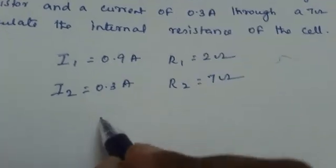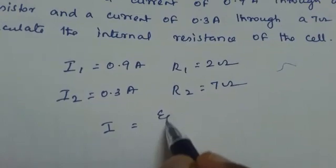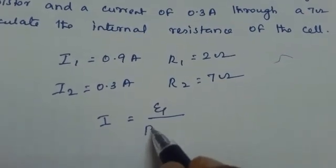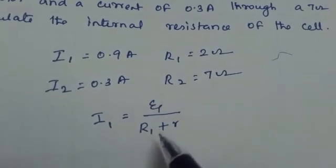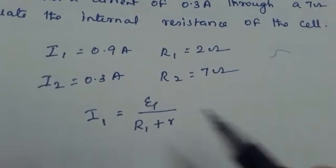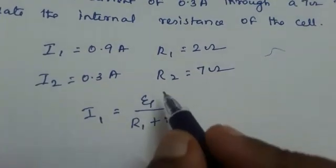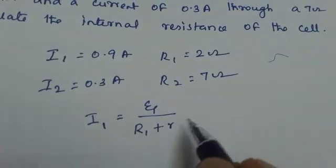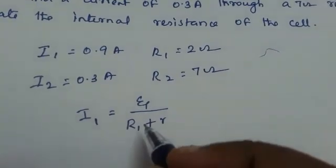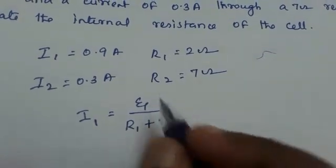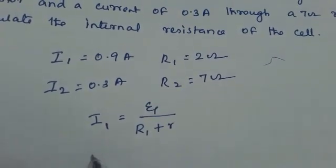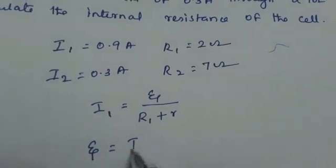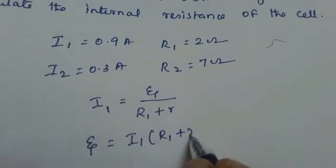I am going to use the formula current is equal to EMF by resistance. Resistance is the total resistance, that is the internal resistance as well as the resistance in that circuit. So I1 is equal to total EMF by total resistance. Small r gives the internal resistance of the cell. Now this can be written as ε is equal to I1 into R1 plus r.